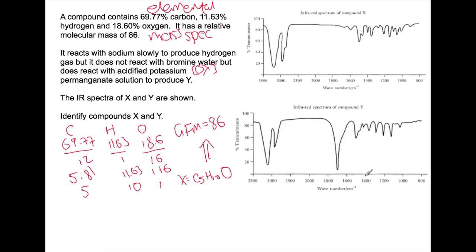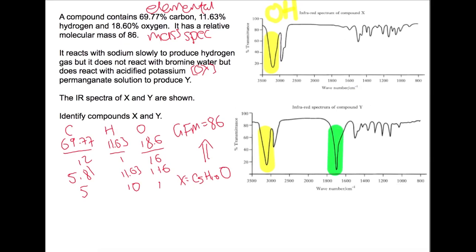If we have a look at the infrared spectra on page 14 of the data book we can identify a couple of different peaks which are useful to look at. Within X we have this peak here at around 3200 and that is usually indicative of a hydroxyl group in an alcohol that is still present in Y. So that's an OH group. However in Y we also have this peak here which is characteristic of a carbonyl group so C double bond O. That would indicate that compound X is an alcohol and compound Y is a carboxylic acid.